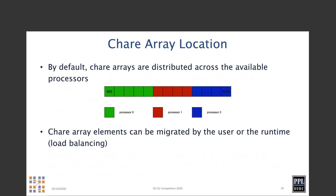With actors, you might end up doing crazy things for creating networks of objects, but a simple index does it much better. How are chare array elements distributed to processors? That's up to the runtime system. A simple map might put them in a round-robin fashion. You can influence the map, and the runtime will perturb that for load balancing purposes. You cannot assume anything about placement.